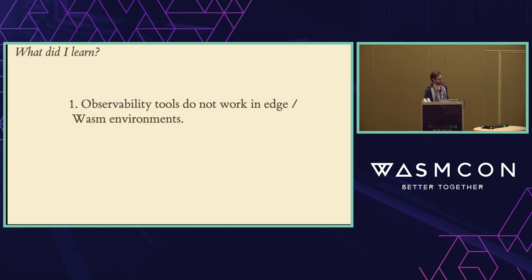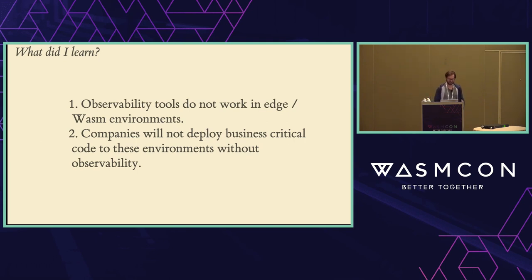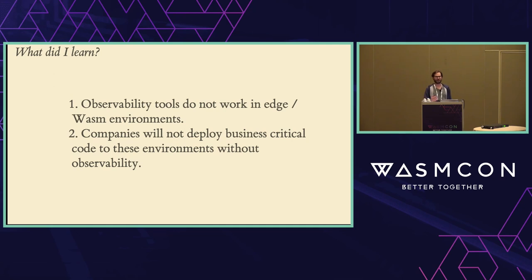What did I learn? First, these tools just don't work on the edge or in Wasm — pretty much none of them work, and it's a pretty big lift to get them to work. The other thing I learned is that companies will not deploy their business-critical code to these environments without observability. I witnessed this firsthand — I saw some companies here actually lose pretty big contracts for not having this solved. This is why I think it's a pretty critical problem for Wasm adoption: if we don't solve it, people will be very hesitant to deploy code that actually matters in production.